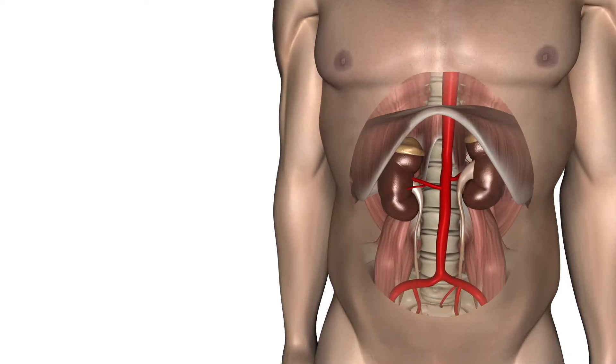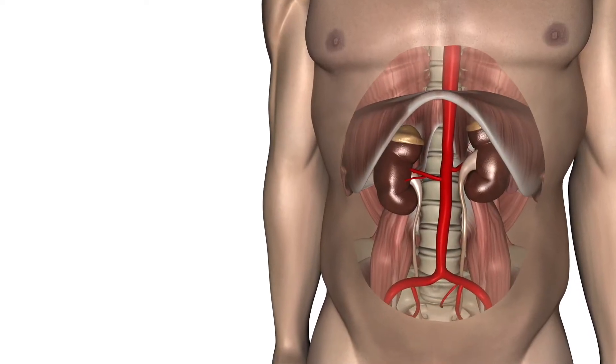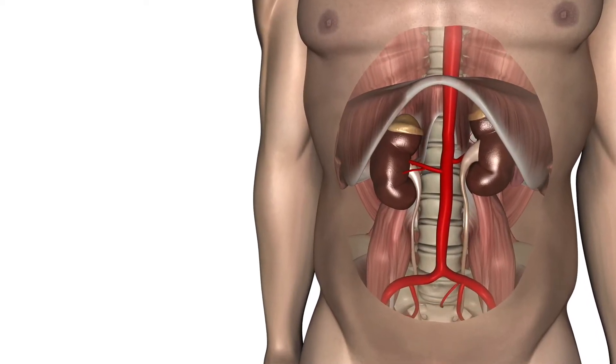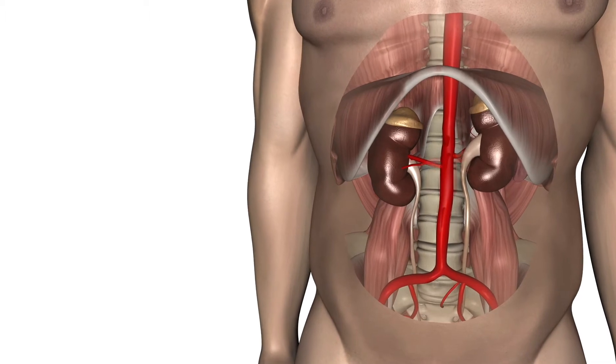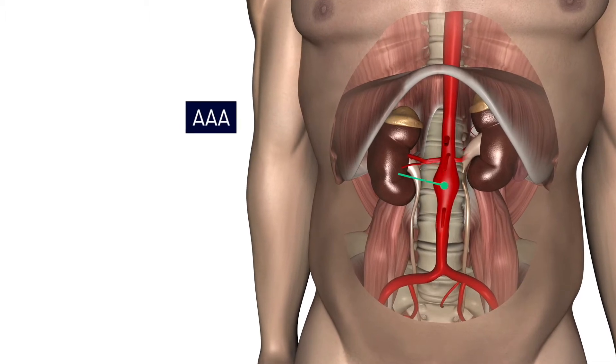Abdominal Aortic Aneurysms, or AAAs, are abnormal dilatations of the abdominal aorta and they're a relatively common and potentially life-threatening pathology.